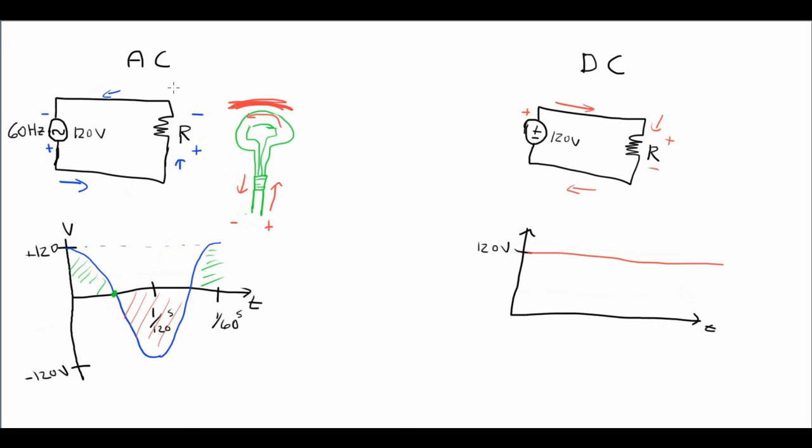So in a nutshell, that's the basic differences between AC and DC in a circuit. I hope this was helpful.